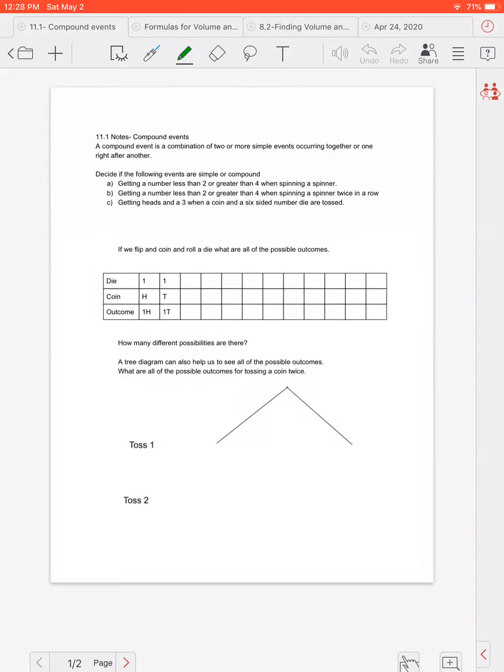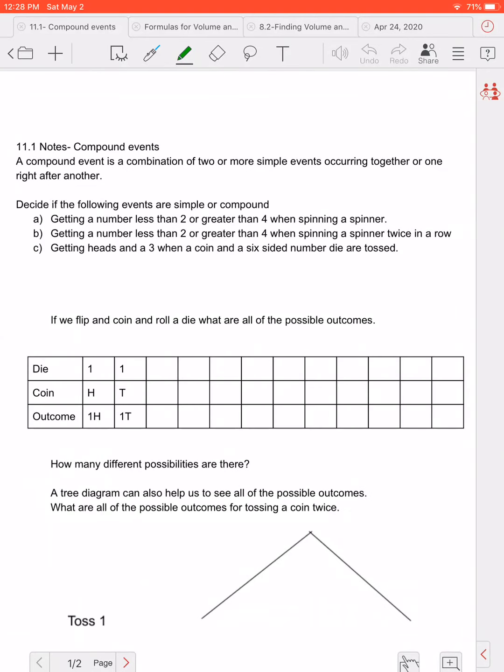So the first thing we want to be able to identify if something is a compound event. So part A says getting a number less than two or greater than four when spinning a spinner. Now again compound event means two events are happening. There are three possibilities for my answer but there's not two events happening. We're only spinning the spinner once. So this would not be a compound event or false.